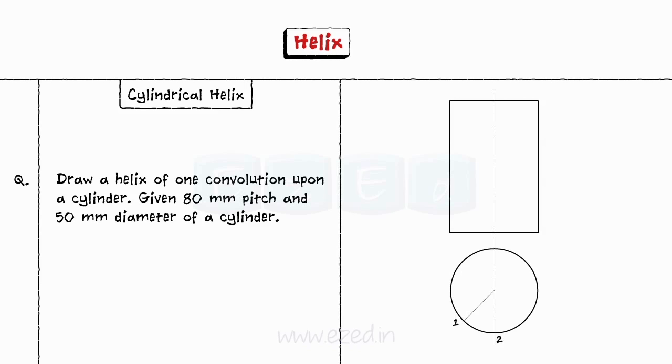Step 2: Divide the circle into 8 equal parts and also the height of the cylinder into 8 equal parts. Name the points as shown.